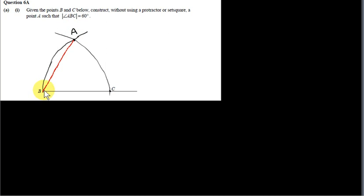This is the point A. If we connect A to B, then the angle ABC formed is 60 degrees, so I want to explain why this is true.